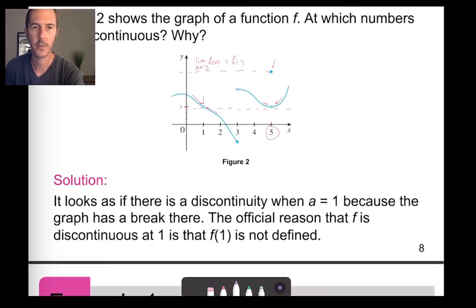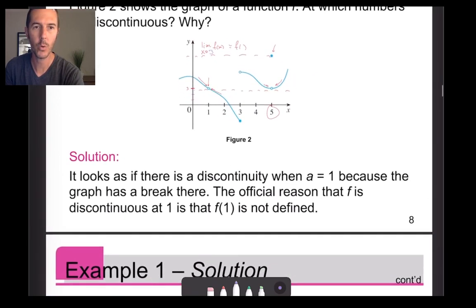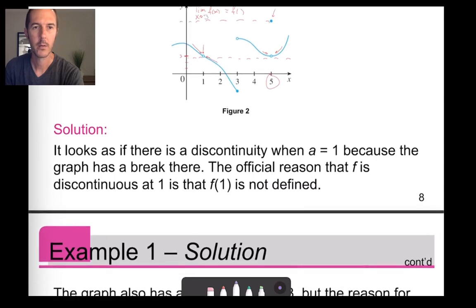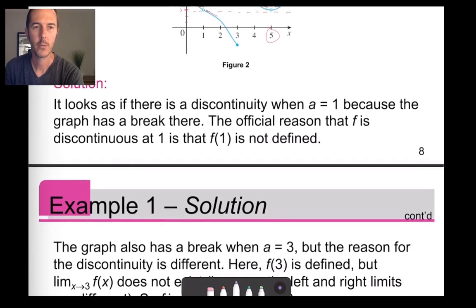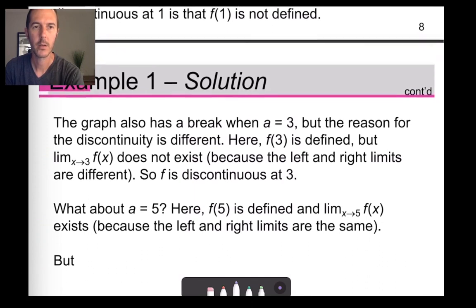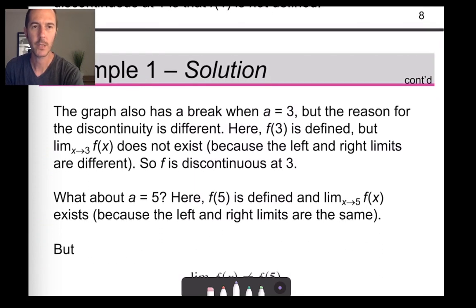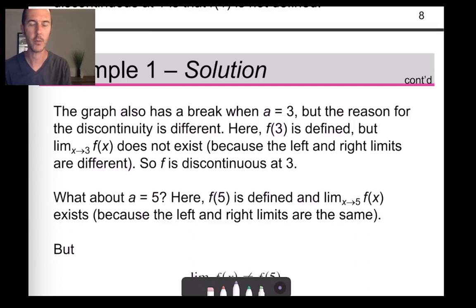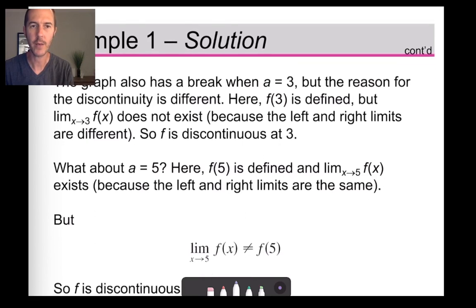So there's a discontinuity at x equals one because the function is not defined there. When a equals three, there's a discontinuity of a different kind — that would be a jump discontinuity because the y value changes rapidly. And at x equals five, there's another type of discontinuity there as well.